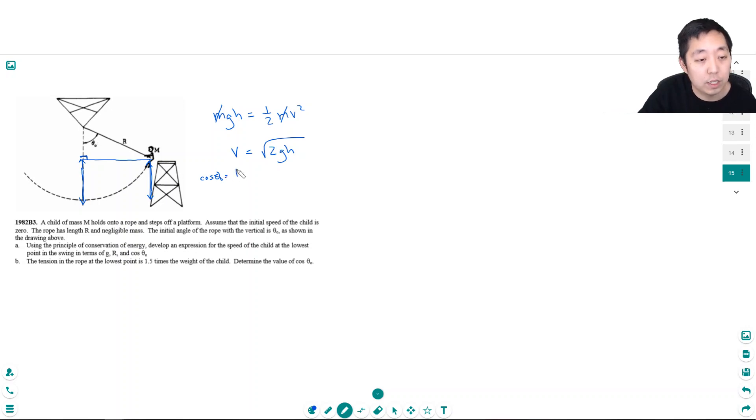And you can see that the cosine of theta not would equal this length, which we'll call x, over r. So x would equal r cosine theta not.